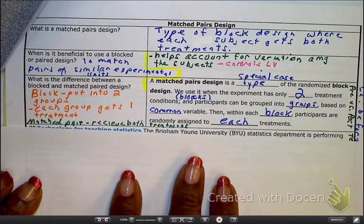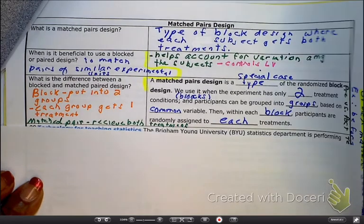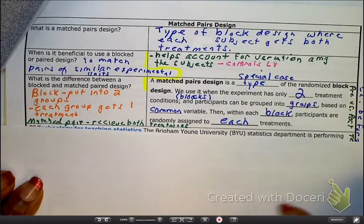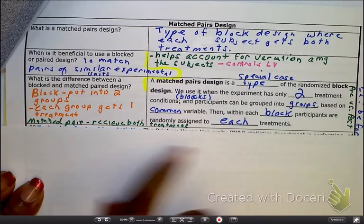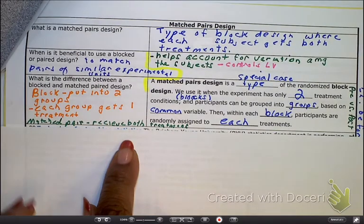And then of course with the other block, the females, the exact same thing is going to happen. Now the way it happens the majority of the time when it comes to that type of matched pair design, while the women are driving the Ford, the men will be driving the Chevy, and then they literally switch off.